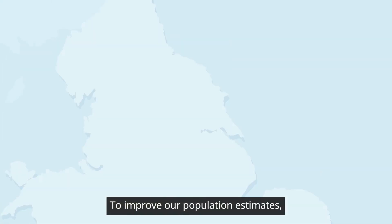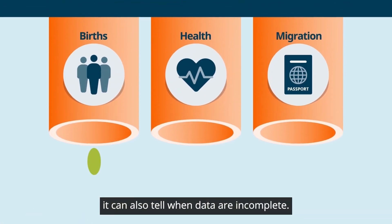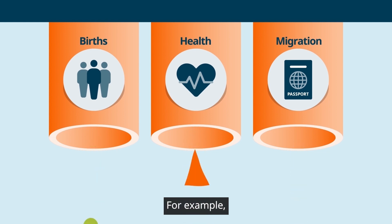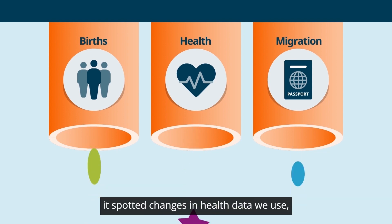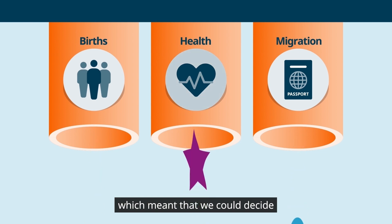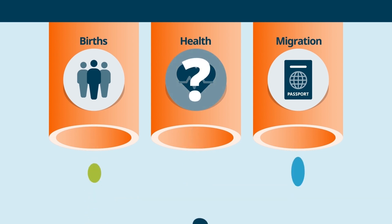To improve our population estimates, it can also tell when data are incomplete. For example, it spotted changes in health data we use, which meant that we could decide how best to use them.